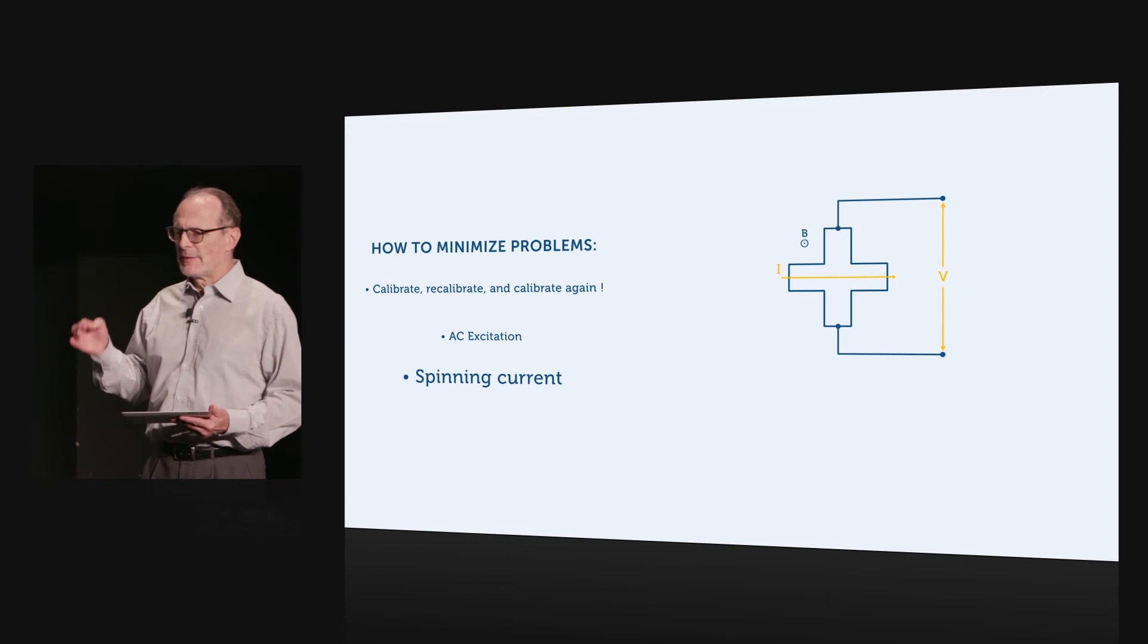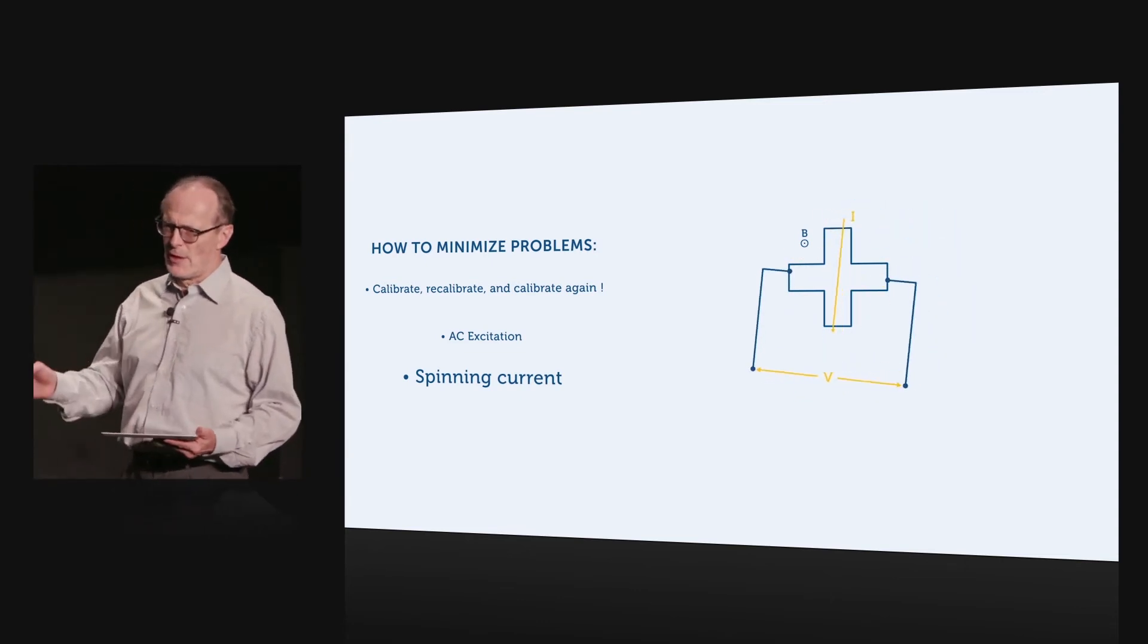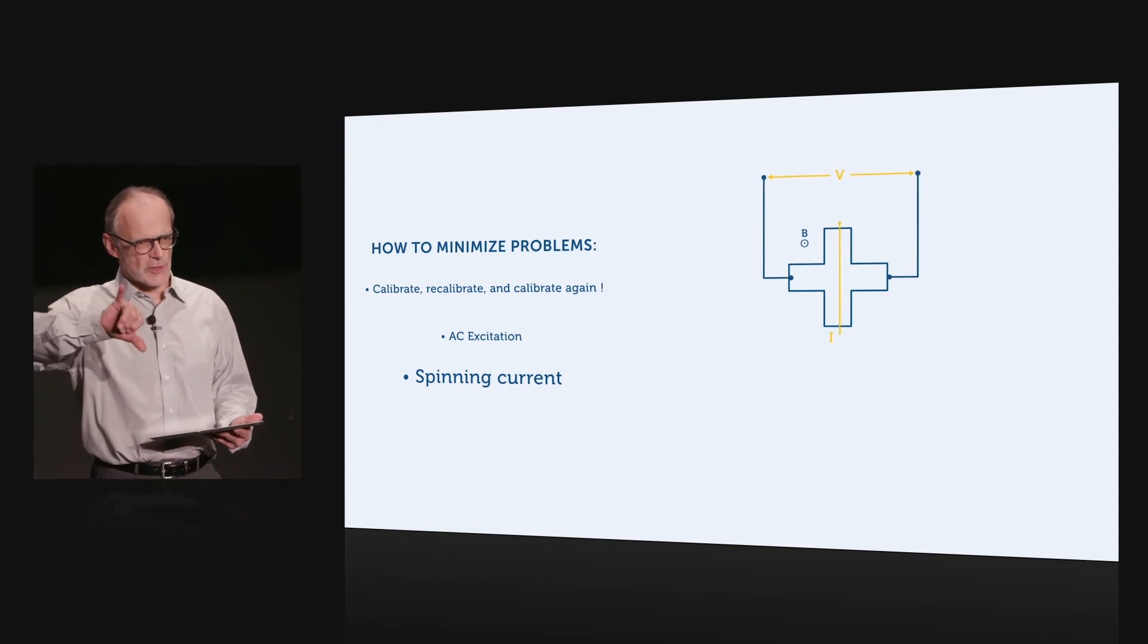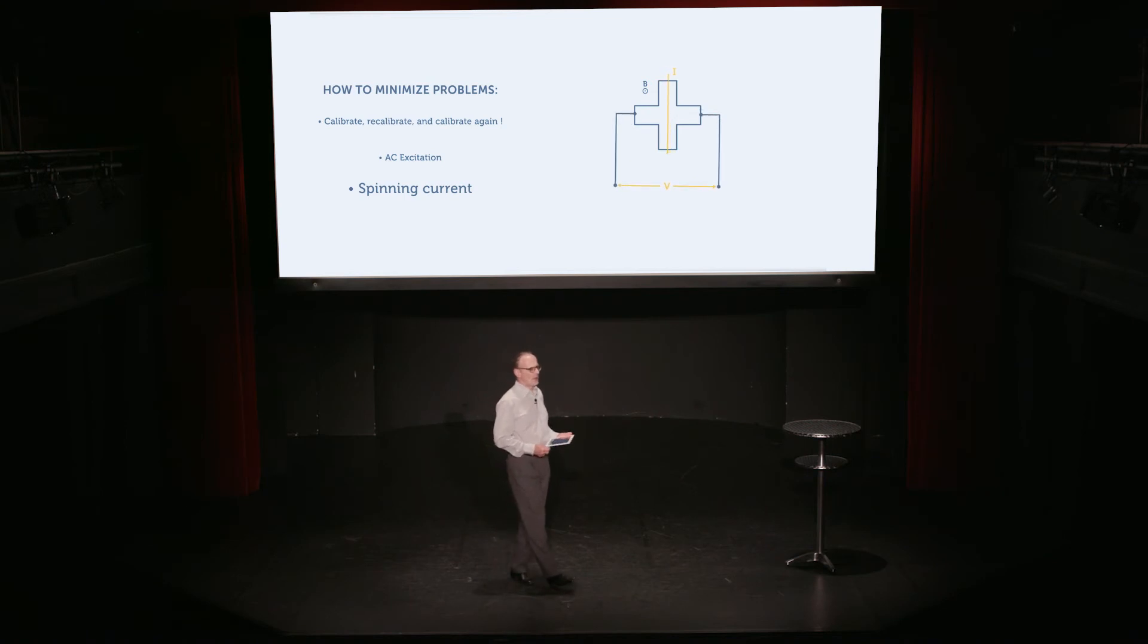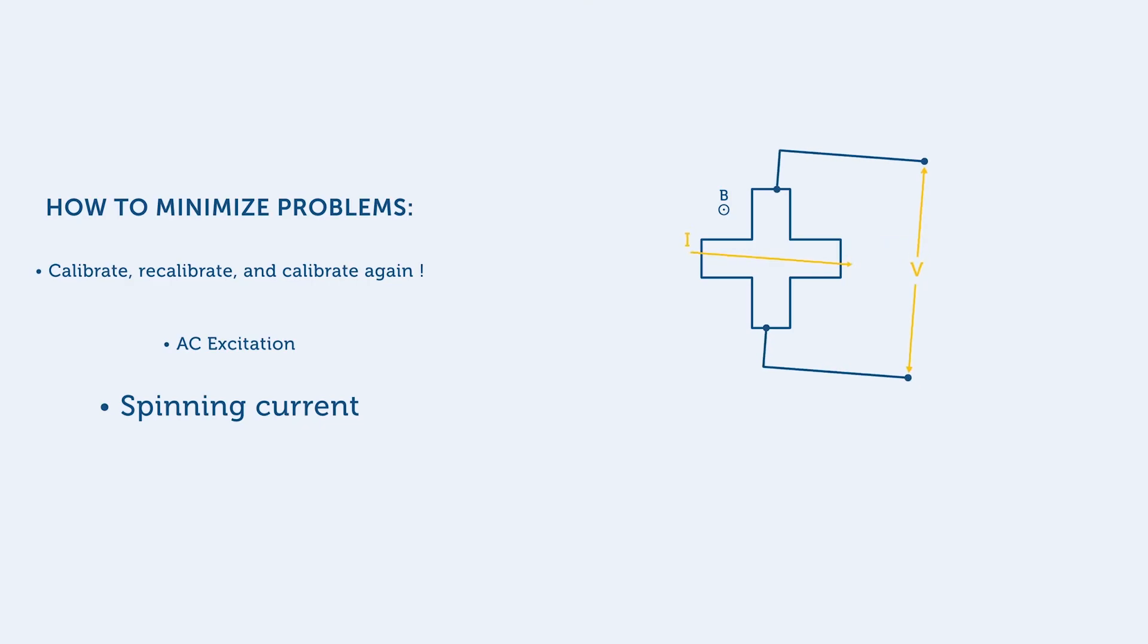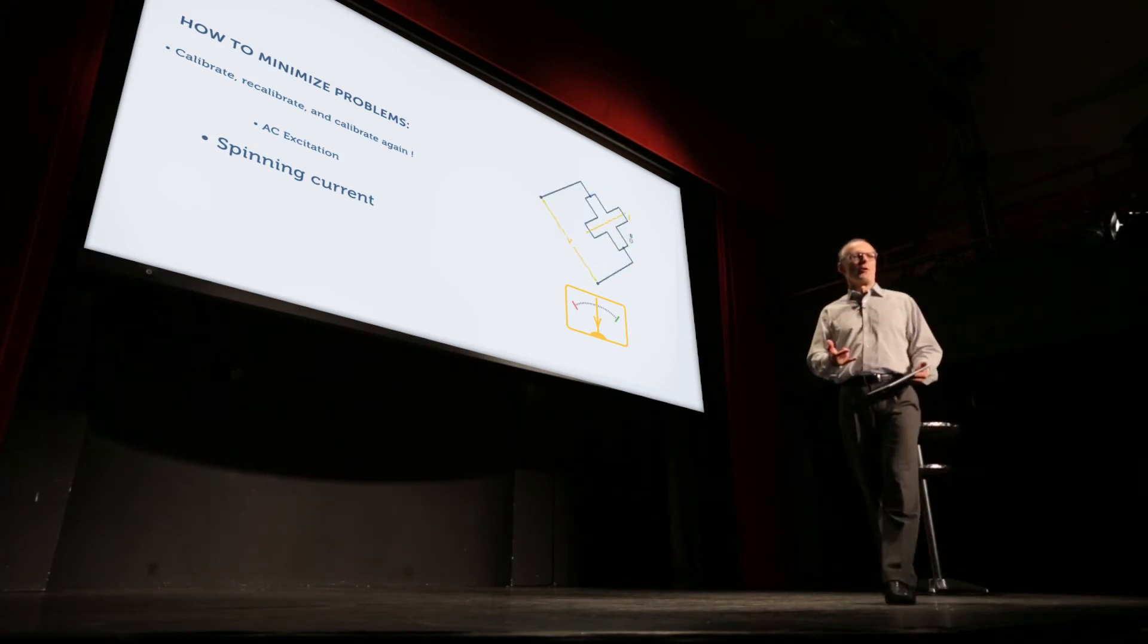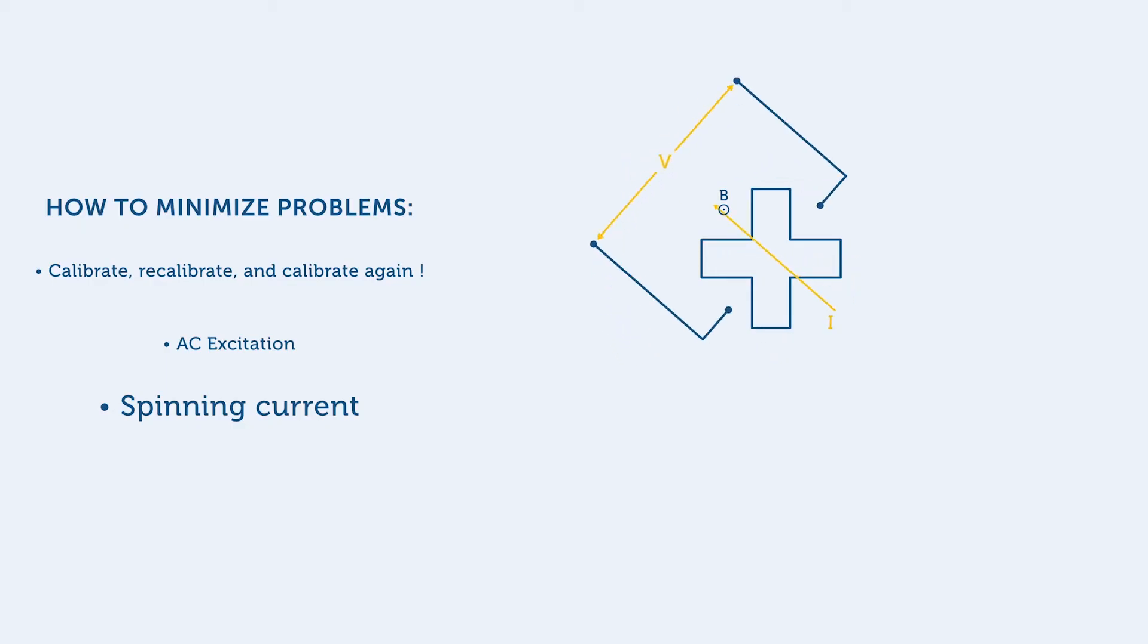It turns out that the sign of the planar Hall effect, as well as the offsets, is reversed if you switch the voltage and the current leads. However, it has no effect on the sign of the thing that you're actually trying to measure, the magnetic field strength. So, if you average the readings as the current spins, you will end up canceling most of the errors due to offset and planar Hall effect. In addition, the spinning current acts very much like the AC excitation and ends up eliminating much out-of-band noise.